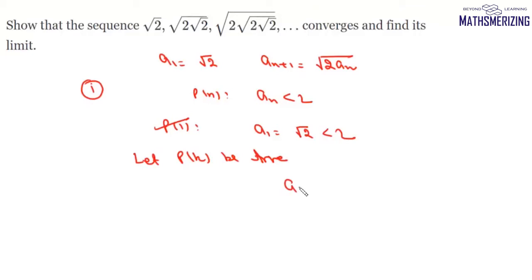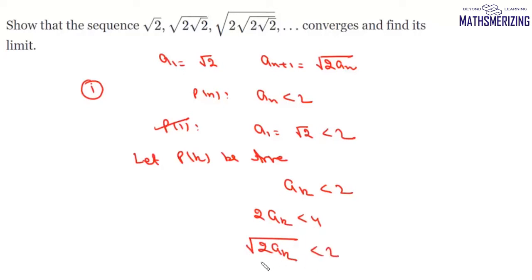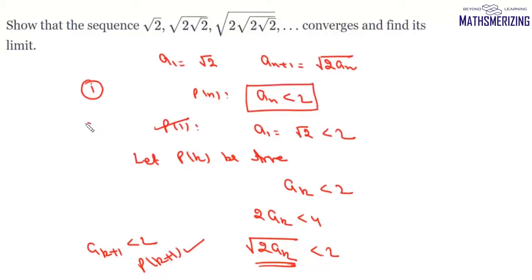We let Pₖ be true, meaning aₖ < 2. Multiplying by 2 gives 2aₖ < 4, and taking the square root gives √(2aₖ) < 2. Since √(2aₖ) = aₖ₊₁, we have aₖ₊₁ < 2, so Pₖ₊₁ is true. By induction, aₙ < 2 for all n, so 0 < aₙ < 2 and the sequence is bounded.